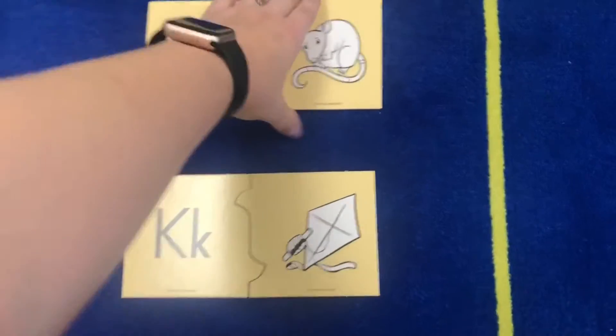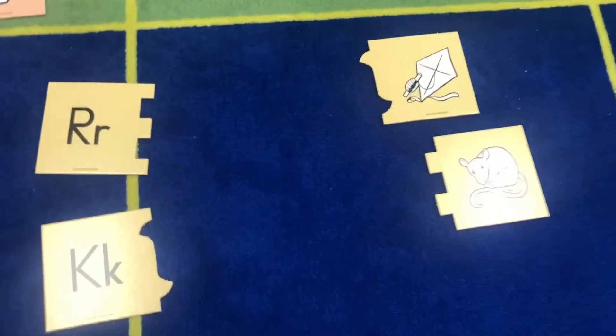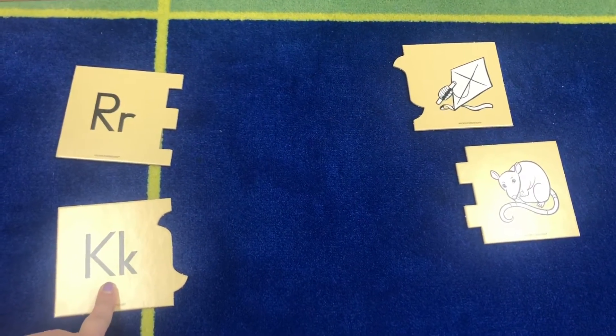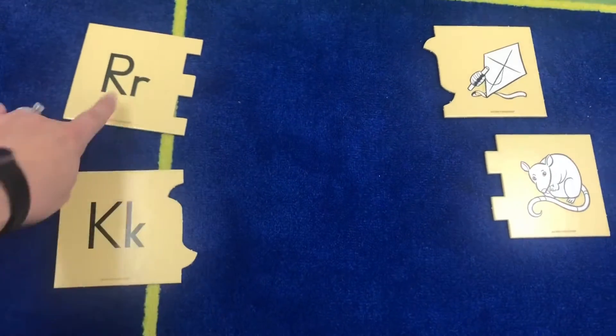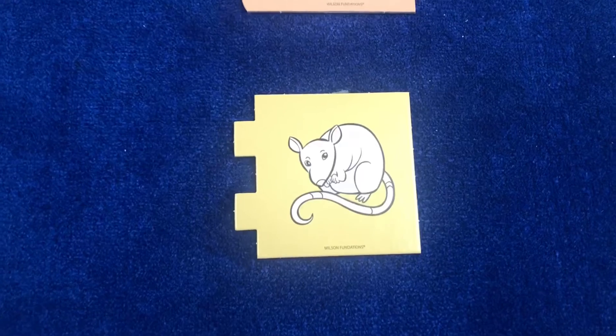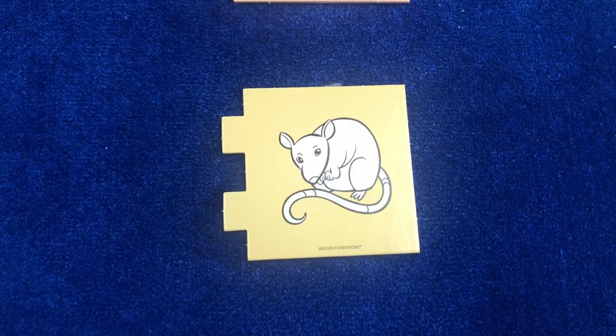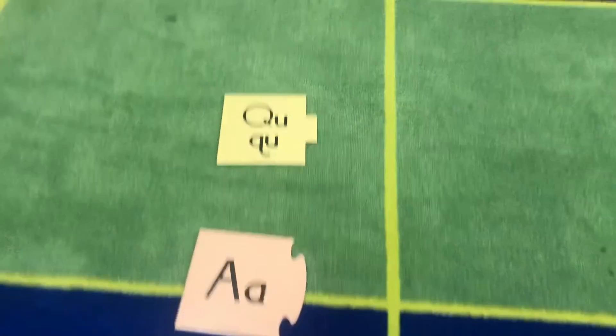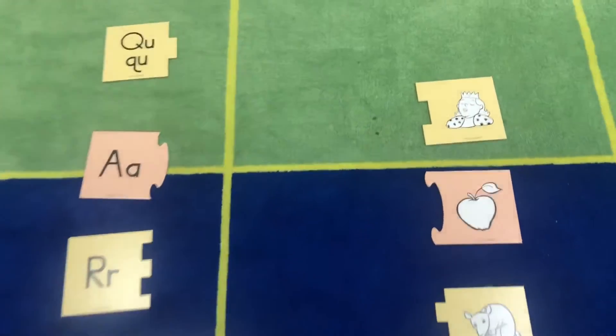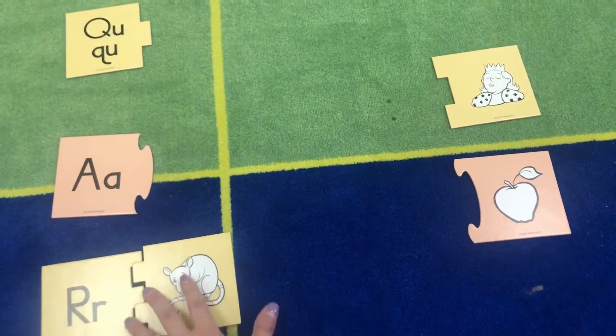You can also do this with two letters at a time. So for example, if we have the rat over here and the kite and we have the R and the K, you can say okay which one goes with which? And you would ask which picture starts with the K? And your child could point to the kite. Which picture starts with the R? And your child can point to the rat and vice versa. This is a rat. What does rat start with? Does it start with the R, the A, or the QU? If you said R, you are correct.